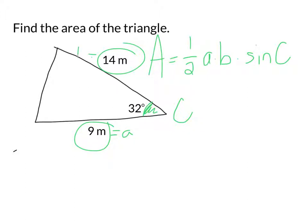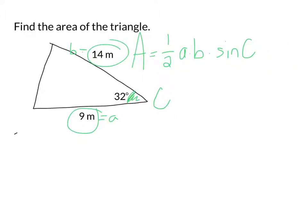We're good as long as the letters aren't the same - we don't have opposite sides. So our area is one half of nine times 14 times the sine of 32 degrees.